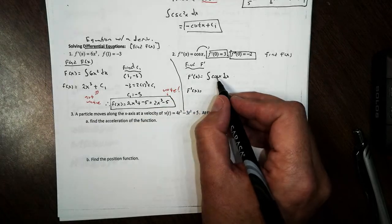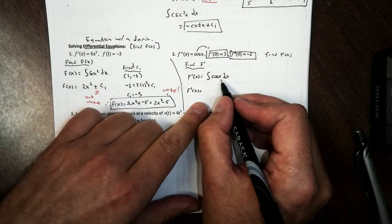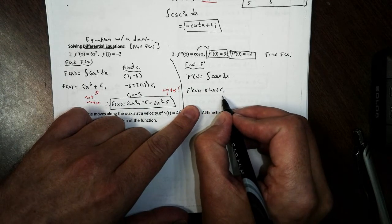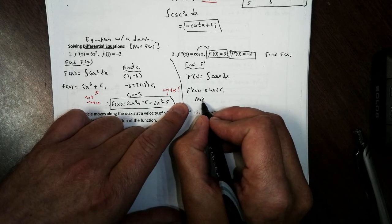So my first derivative, the antiderivative of cosine. Remember, what function's derivative is cosine? It's sine. So the antiderivative of cosine is sine of x plus c1. Now, we have to find c1.